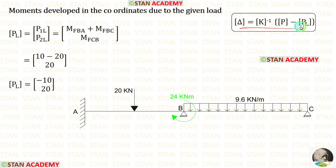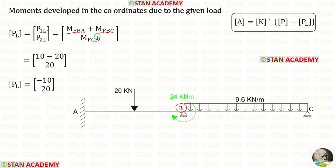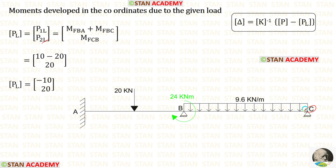Now let us find the PL matrix. To find P1L, our first coordinate is at point B. At point B we have two fixed end moments: M_F_BA and M_F_BC. We add both of them and get −10. To find P2L, our second coordinate is at point C, where we have fixed end moment M_F_CB. We apply that value.